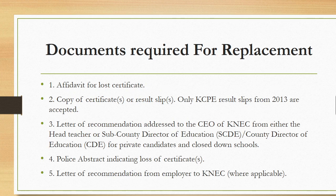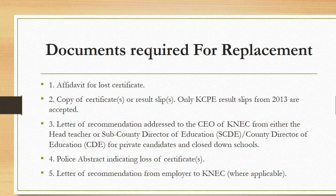So what are the key documents that are required for replacement? First, you need to have an affidavit for loss of certificate. You need to go to a lawyer — they'll sign for you an affidavit, and that is a required document. And of course, a copy of your certificate or results slip. Note that only KCP results slips from 2013 are accepted, so anything beyond that is not accepted. You also need to have a recommendation addressed to the CEO of the NEC from either the head teacher, sub-county director of education, or county director of education, for private candidates. Also obtain a police abstract certificate indicating loss of certificate — very, very important.